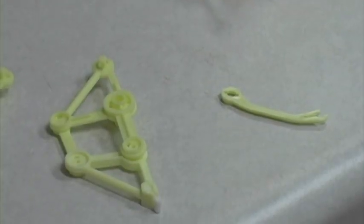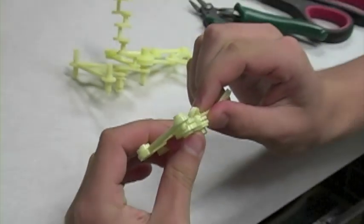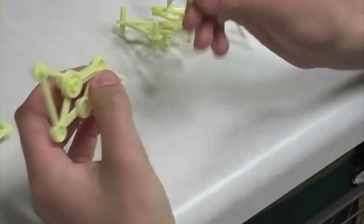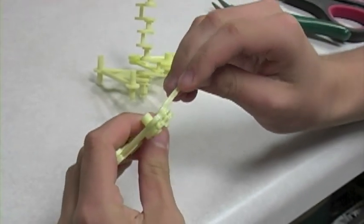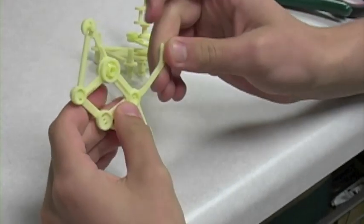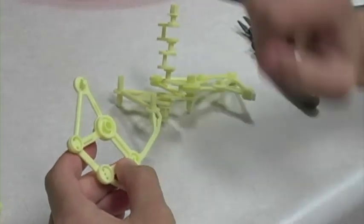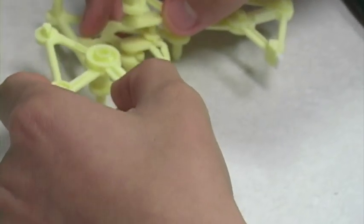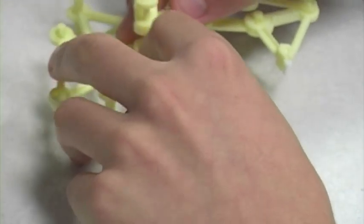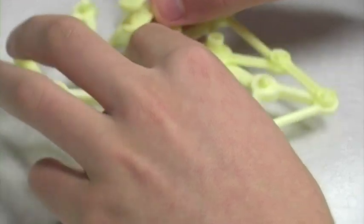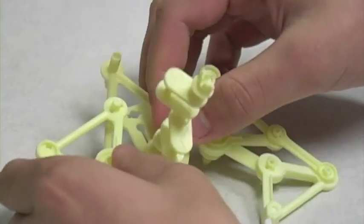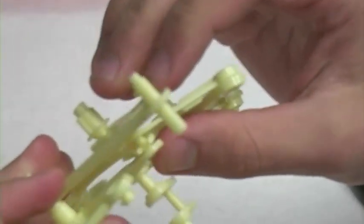For step three of section two you're going to need part F and another leg. Now we differ from the provided instructions just a little bit. We suggest you go ahead and attach part F to the leg before attaching it to the other side of the frame via the larger joint. It just proves a little easier. Once you've done that, connect part F to the axle so that it is in front of part E.